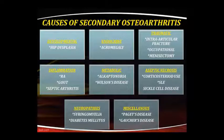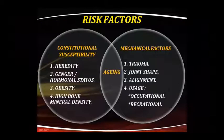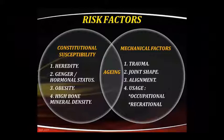Risk factors include constitutional susceptibility, aging, and mechanical factors. Constitutional susceptibility includes heredity, gender — more common in females — hormonal status, and postmenopausal condition. Obesity and high bone density can also be risk factors. Mechanical factors include trauma, change in the shape of the joint, altered alignment, and occupational or recreational activities.